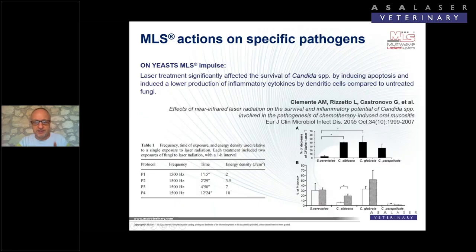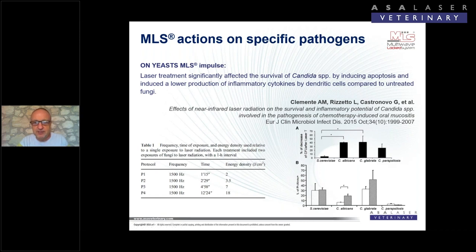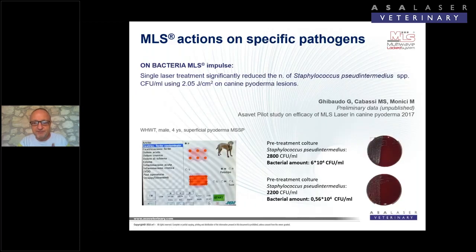This explains the efficiency of MLS laser on Candida albicans. A study in human medicine was made for patients who developed Candida after chemotherapy for tumors — it becomes a very big problem in the mouth when drugs no longer work. They treated the Candida with MLS using a special protocol, and noticed a reduction of 70 to 90 percent in the number of colonies.